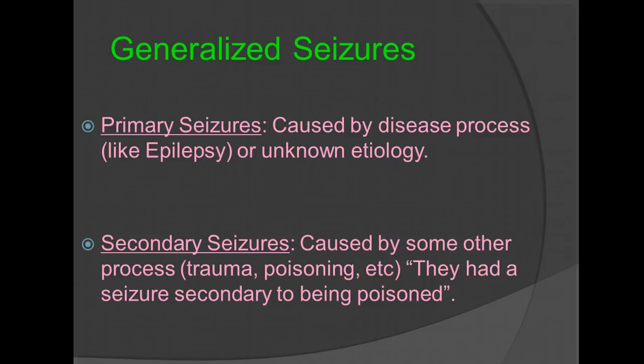For generalized seizures, this involves both hemispheres of the brain. Your primary seizures are caused by disease process, like epilepsy, or unknown etiology. Secondary seizures can be caused by some other process, such as trauma, poisoning, etc.